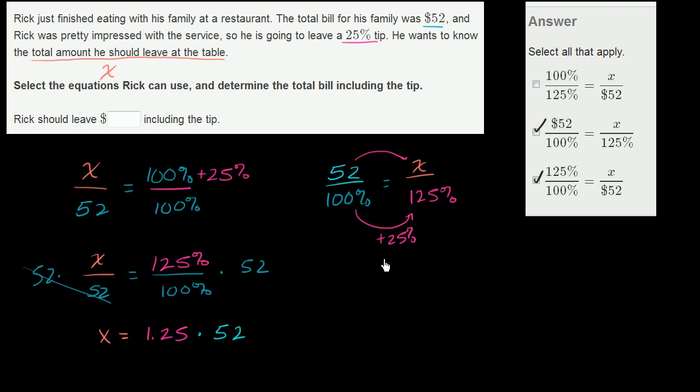And then I could just multiply that. Let's see. 4 goes into 52 13 times. So this is going to be 1 point... Well actually, let me just multiply that. I don't want to make a mistake here. So 1.25 times 52.